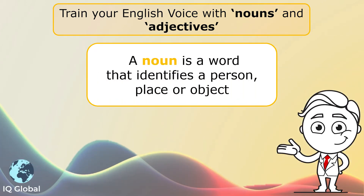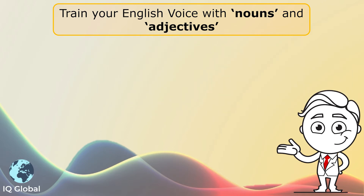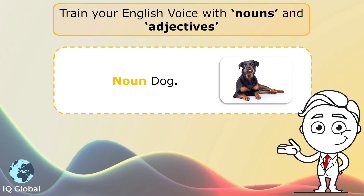Nouns. A noun is a word that identifies a person, place, or object. For example, a dog. A dog is the name of something.